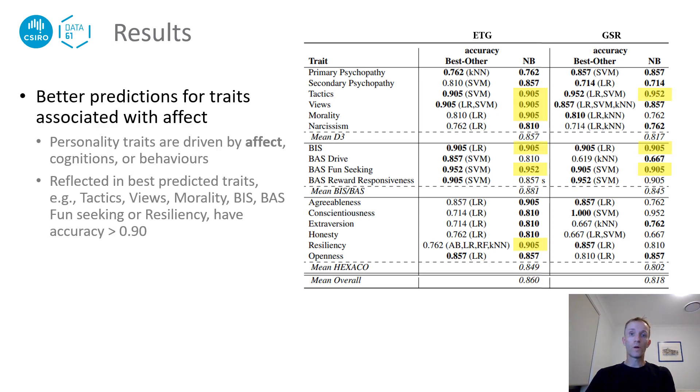Another interesting finding revolves around traits associated with affect. Personality traits have been shown to be driven by three major aspects: affect, cognitions and behaviors. Some of the traits in our inventories fall into the affect category and are clearly better predicted than the rest. These traits like tactics, views, morality, BIS, BAS fun seeking or resilience achieve accuracies of over 90% and we attribute this result to the affect focus of our stimuli.